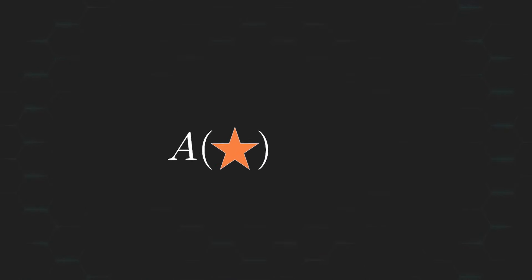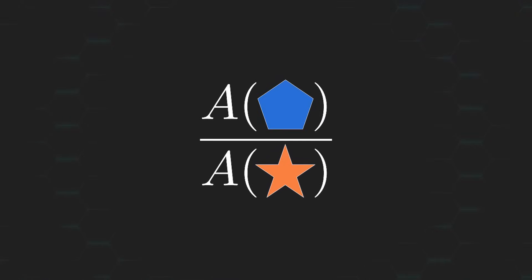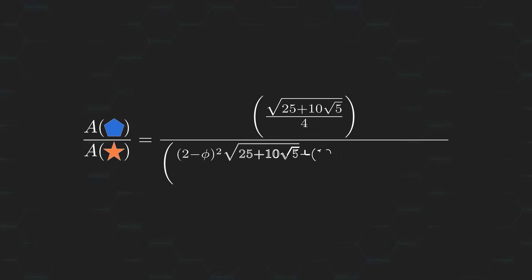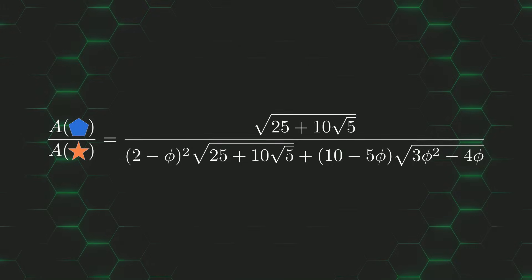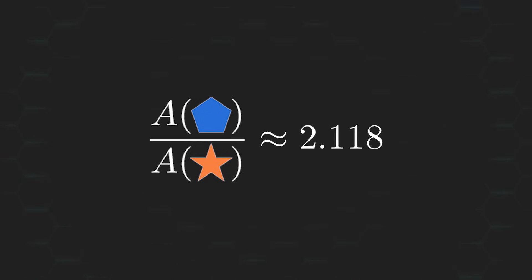Now, for the last step, we just need to divide the area of the pentagon by the area of the star, and we'll get the ratio we're looking for, which comes out to… well, whatever this is. And just to put your mind at ease, this comes out to approximately 2.118.